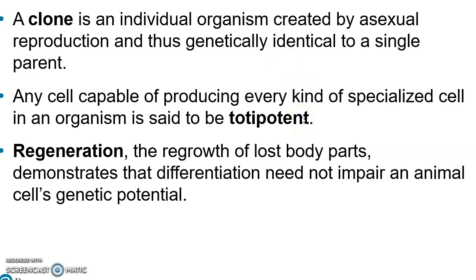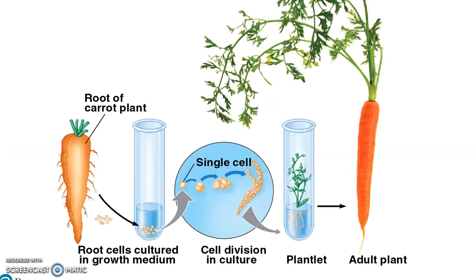With plants, if you take a cutting, a lot of different kinds of plants can do this — you can take a cutting, stick it in water or soil, keep it wet, and it will produce roots and make a whole new plant. In carrots, you can take a single cell from the actual root or carrot part of the plant, grow it in a culture medium, and it will differentiate and form a whole new adult carrot plant. That would be a clone.